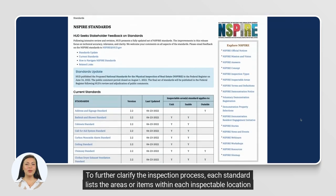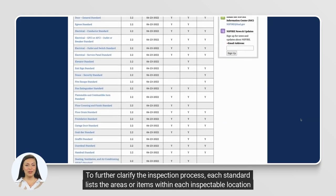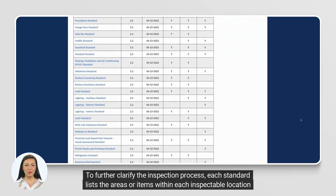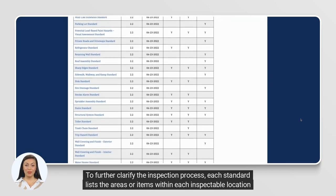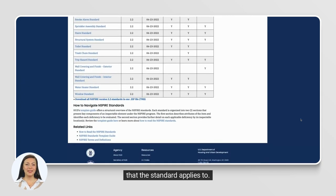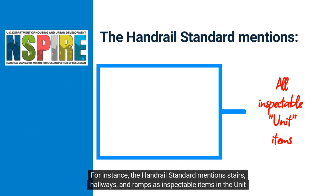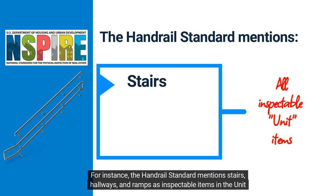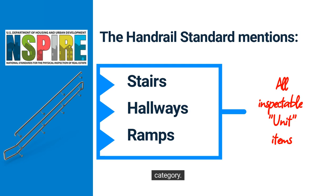To further clarify the inspection process, each standard lists the areas or items within each inspectable location that the standard applies to. For instance, the handrail standard mentions stairs, hallways, and ramps as inspectable items in the unit category.